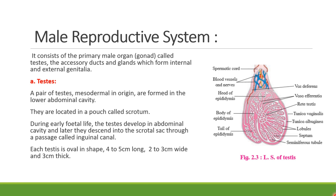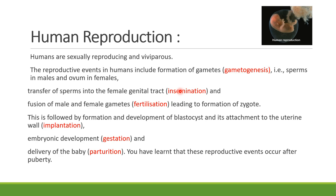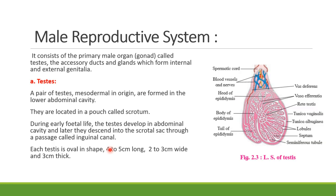In the last lecture, we studied human reproduction and started with the male and female reproductive organs, which are important for sexual reproduction. We also saw the sequence of reproduction: gametogenesis, insemination, fertilization, implantation, gestation, and parturition — these are the events of sexual reproduction step by step.